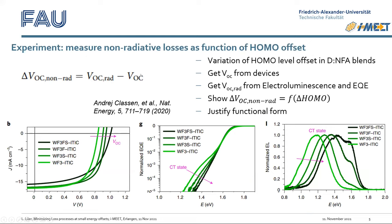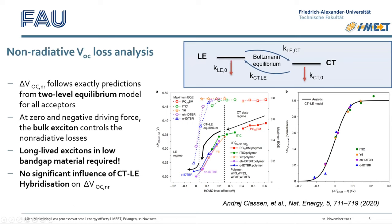To calculate the non-radiative voltage losses we need the VOC — so we need devices — and we need the radiative contribution to VOC, which requires EQE measurements and electroluminescence measurements. Here I show an example Andrei performed for one combination with ITIC: you see very nicely the monotonous behavior — as the HOMO level goes down, the VOC goes up, the CT state emission disappears, and you get close to pure acceptor emission.